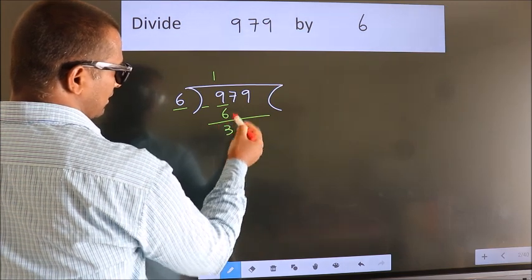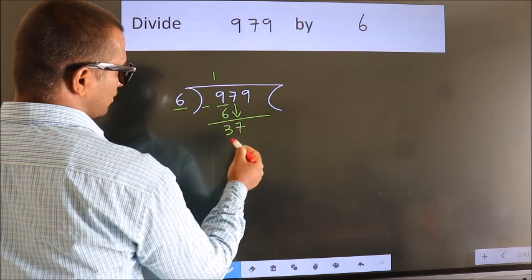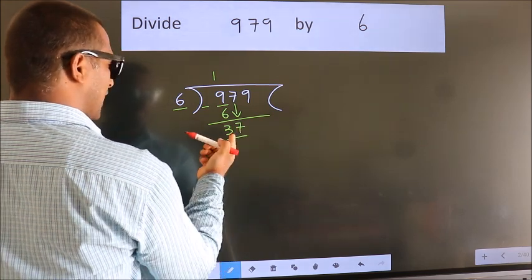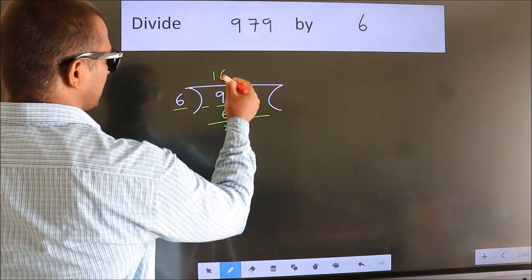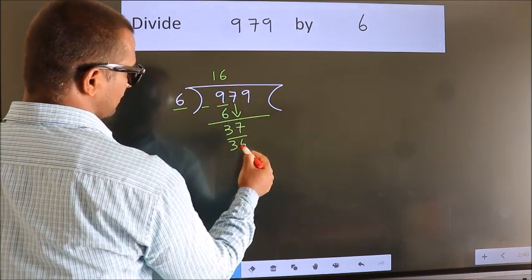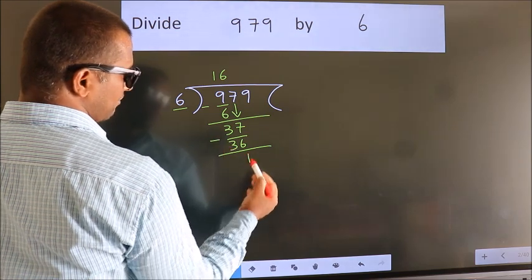After this, bring down the next number, so 7 down, giving us 37. A number close to 37 in the 6 table is 6 sixes, which is 36. Now we subtract and get 1.